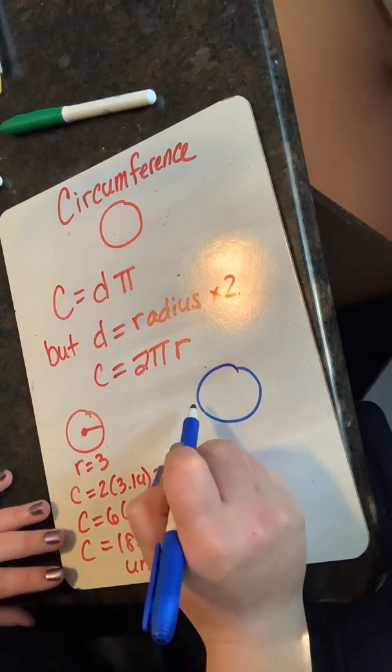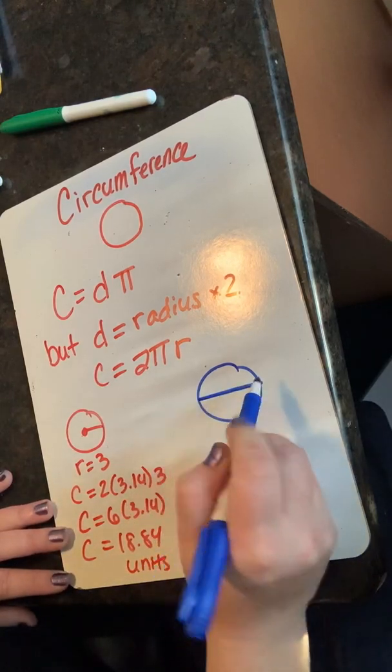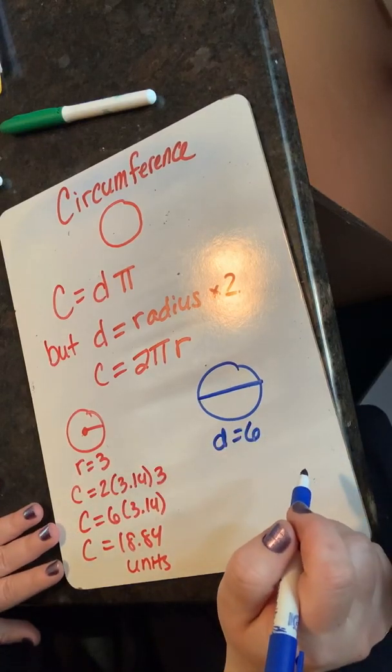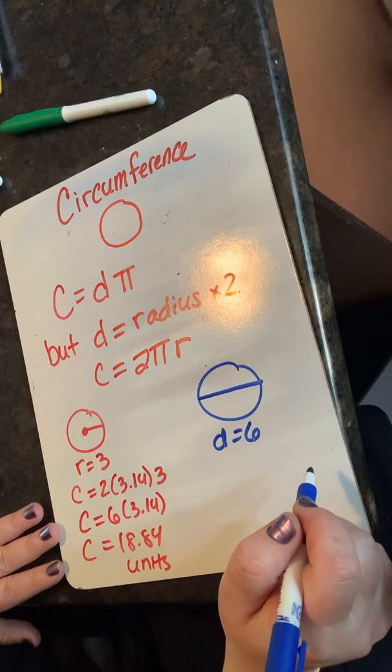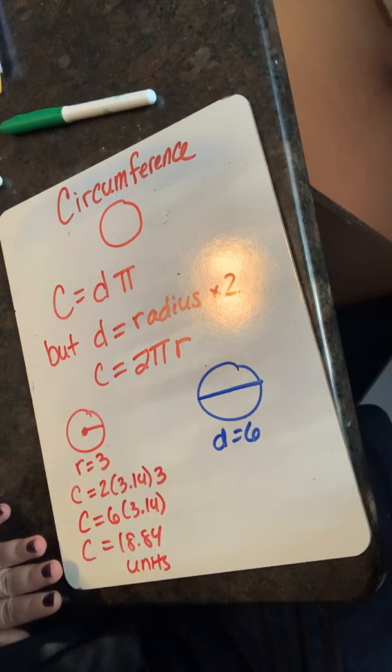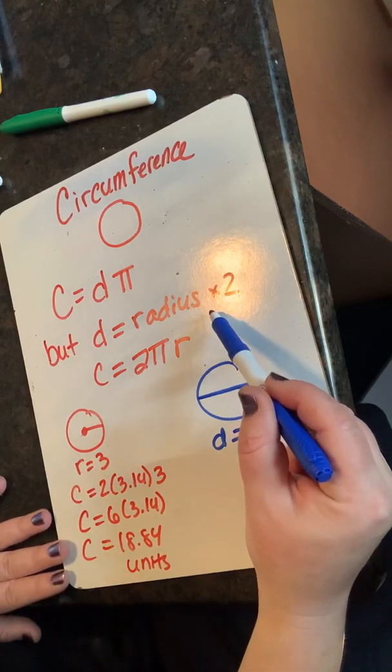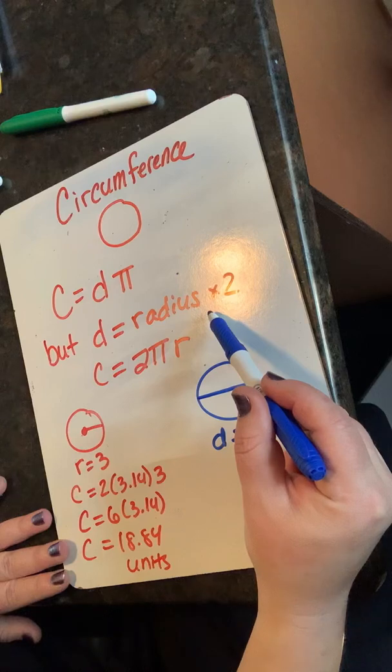This circle whose radius is three has a diameter that is six. I know diameter is six because I use this equation diameter equals radius times two.